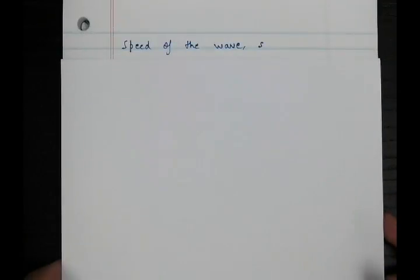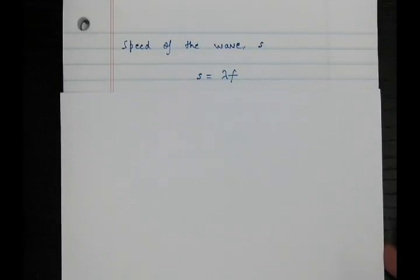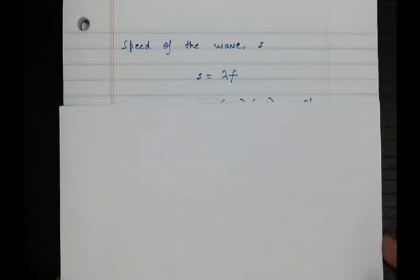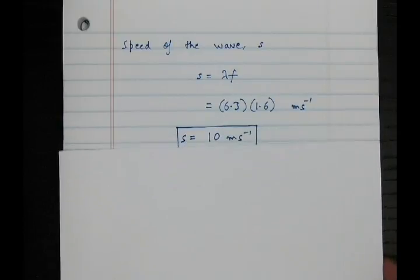Let's find out by what speed is the wave moving through the string. We'll find the speed of the wave, let's say s. And s is given by λ into f. λ being the wavelength and f is the frequency. We found out these values earlier. Plugging in the values 6.3 and 1.6, the unit for speed are meter per second. We find out that the speed of the wave through the string is 10 meters per second.